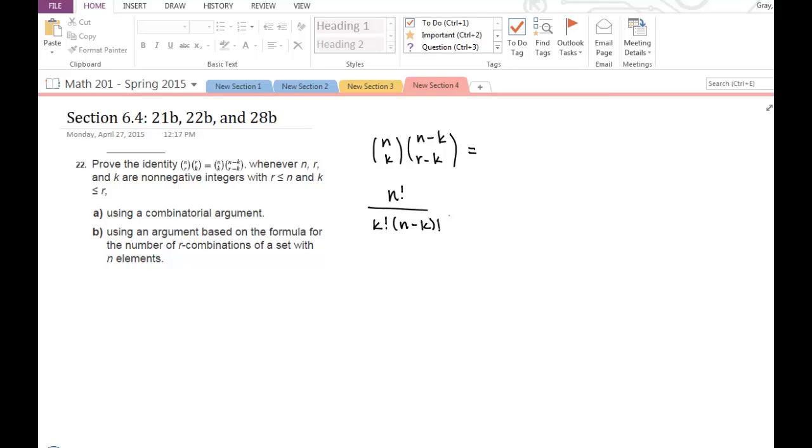And I know that n minus k choose r minus k is just n minus k factorial divided by r minus k factorial times n minus k minus the quantity r minus k factorial.